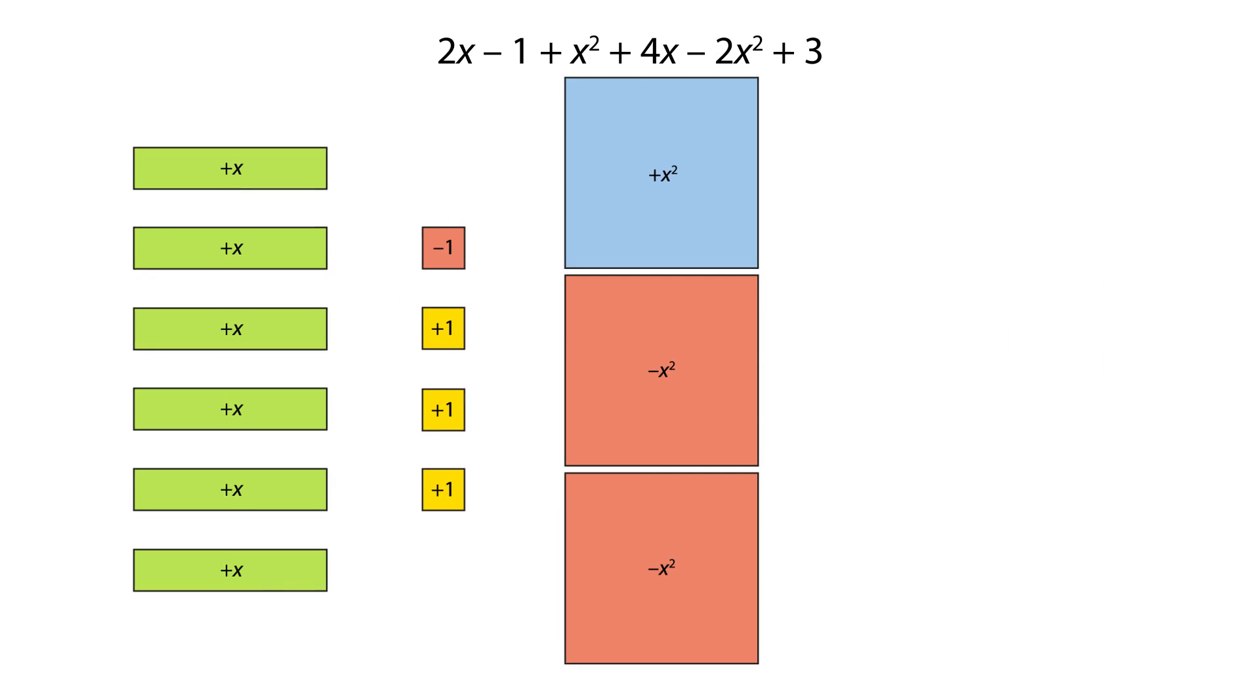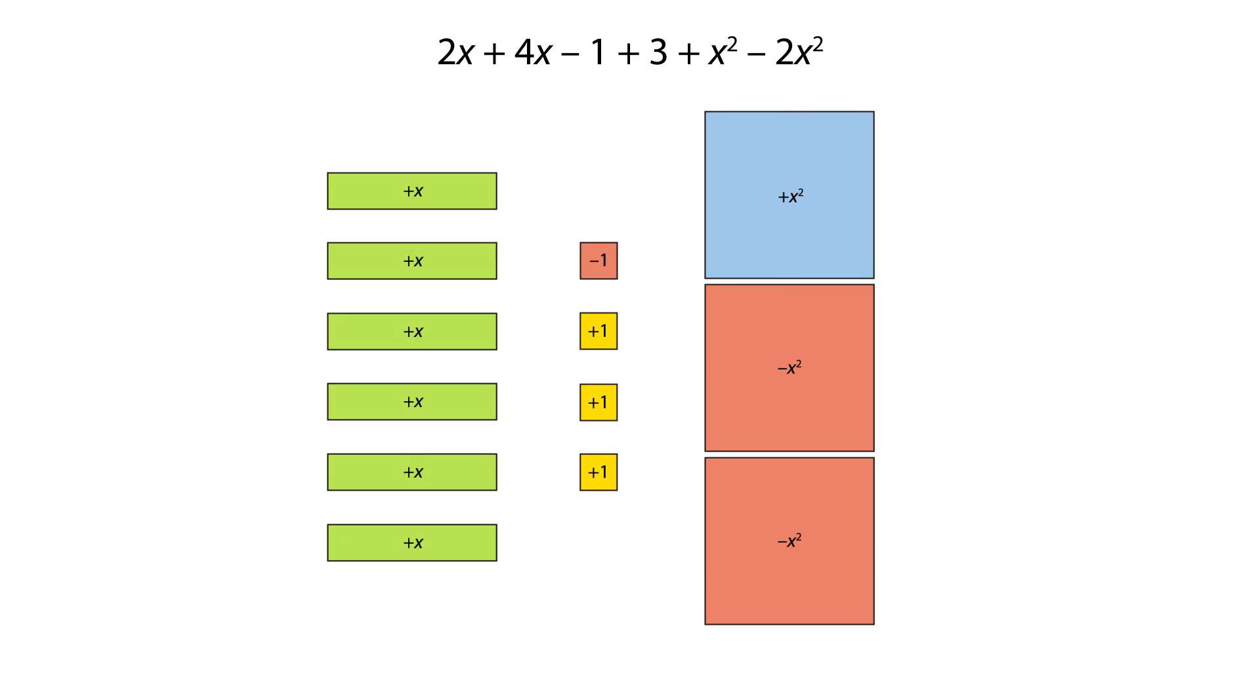The like terms in the expression are represented by tiles of the same type. We can group these tiles together, making zero pairs easier to identify.